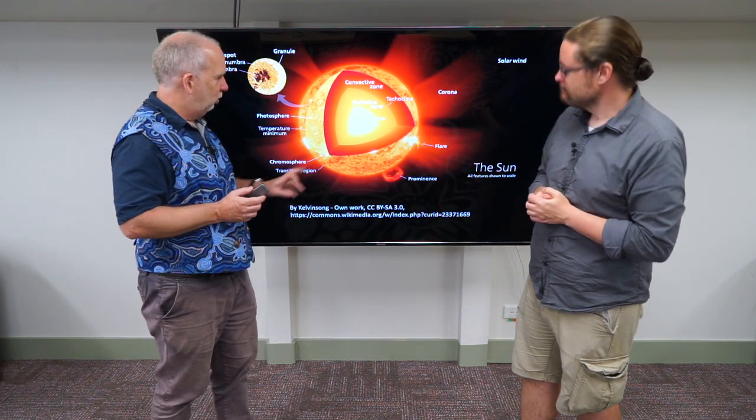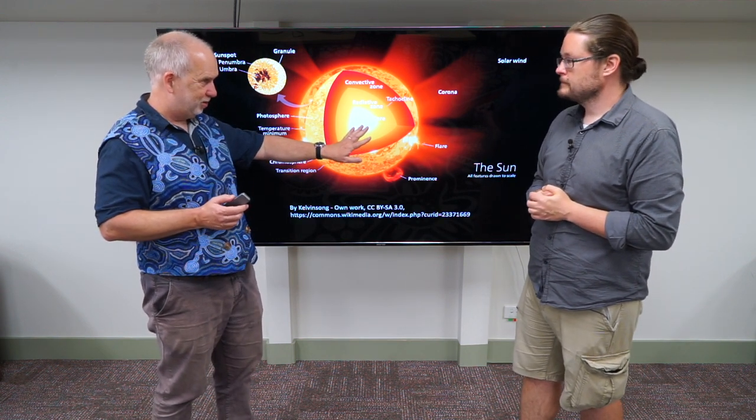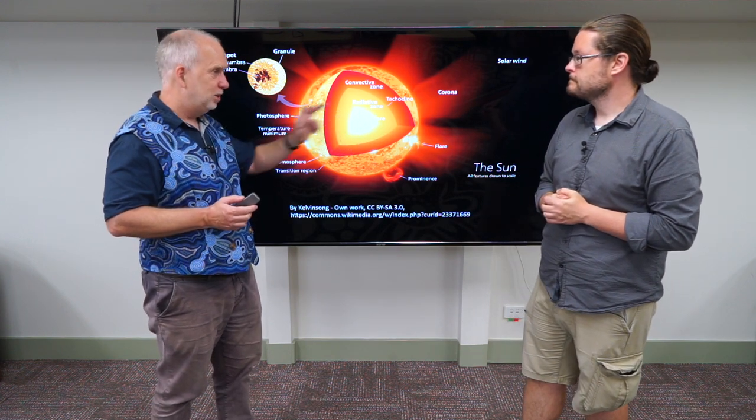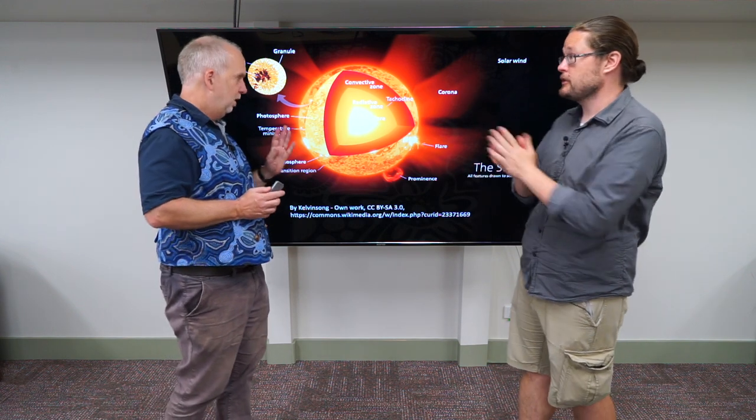So here's our model again, we have the core, which is undergoing the nuclear fusion, the PP chain that we talked about earlier. And that's going to increase the amount of helium and decrease the amount of hydrogen. That's right, so it's turning that hydrogen into helium essentially through the chain.